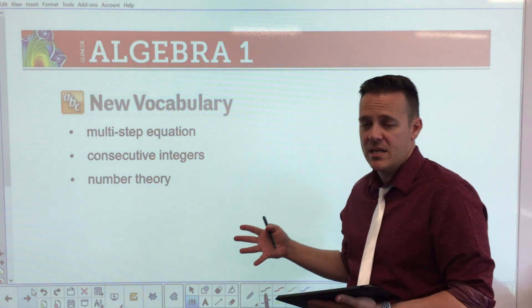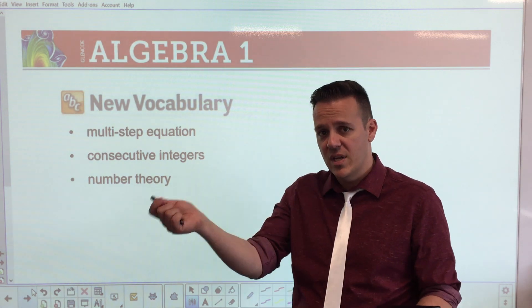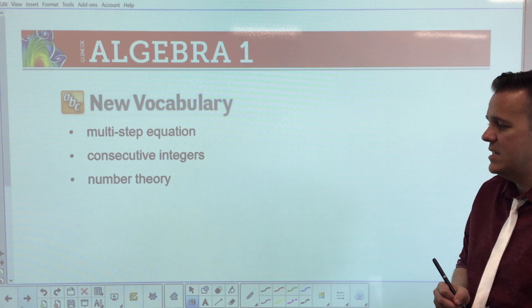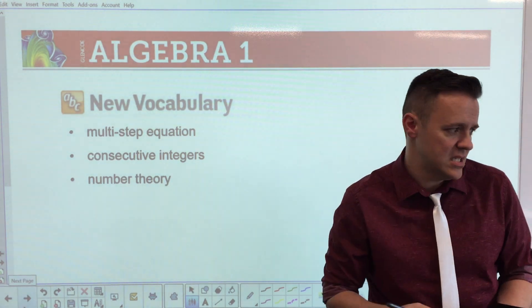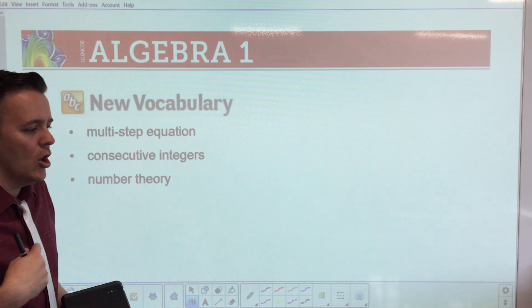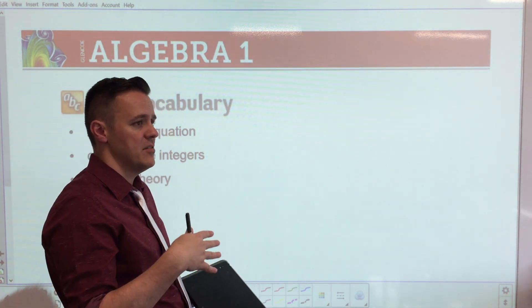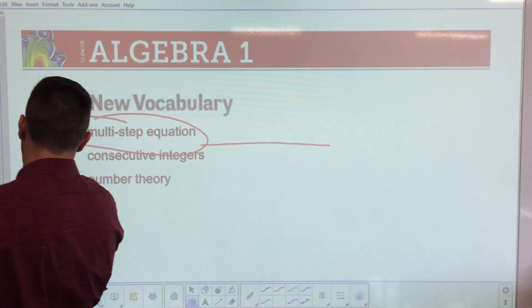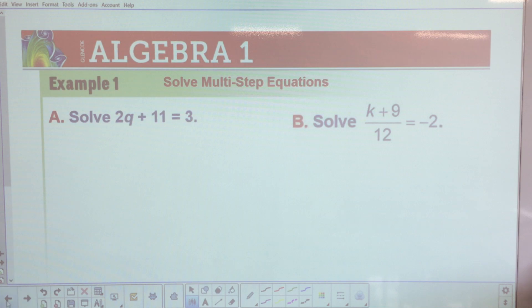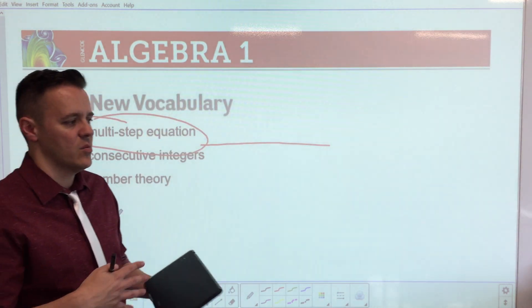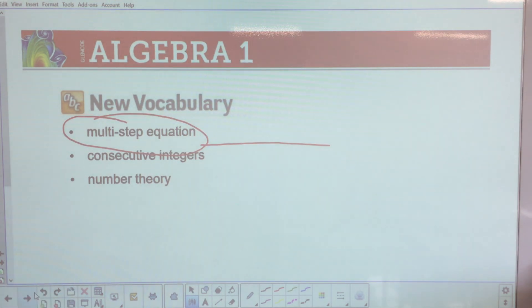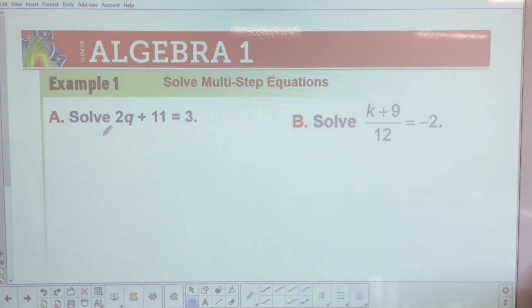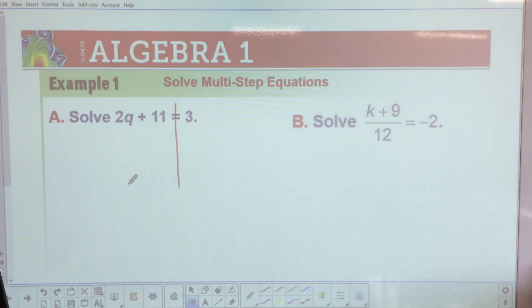A farmer planted 35 more acres of corn this year than last year. If he planted 200 this year, how much did he plant last year? Set up the equation, subtract 35 from both sides — x equals 165. He planted 165 acres the year before.